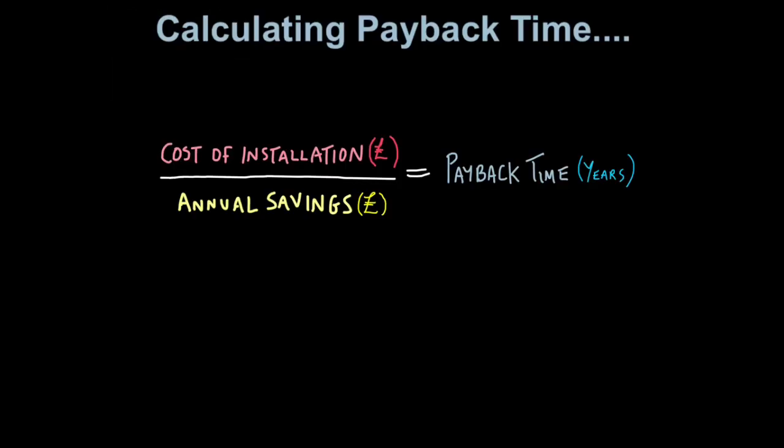Now we'll look at the idea of payback time and how to calculate it. Payback time is the idea that when we install such energy saving devices, they save us money. So every year, each one of these devices save us a certain amount of money. That money saved actually pays for the cost of installing such devices. The amount of time it takes for the savings you make every year, the annual savings, to equal the cost of installation is called the payback time.